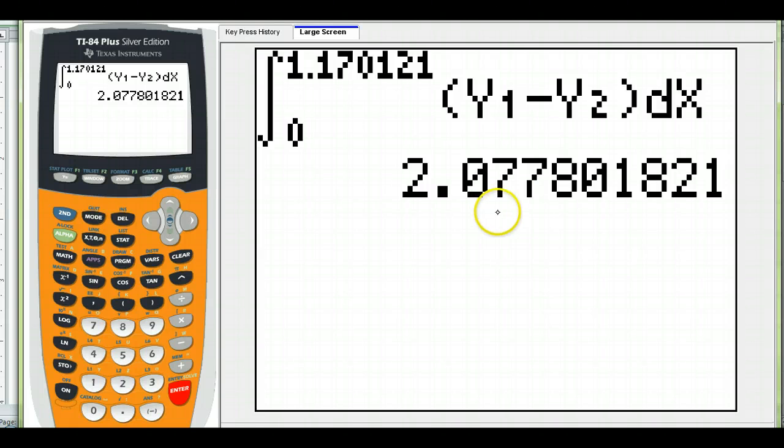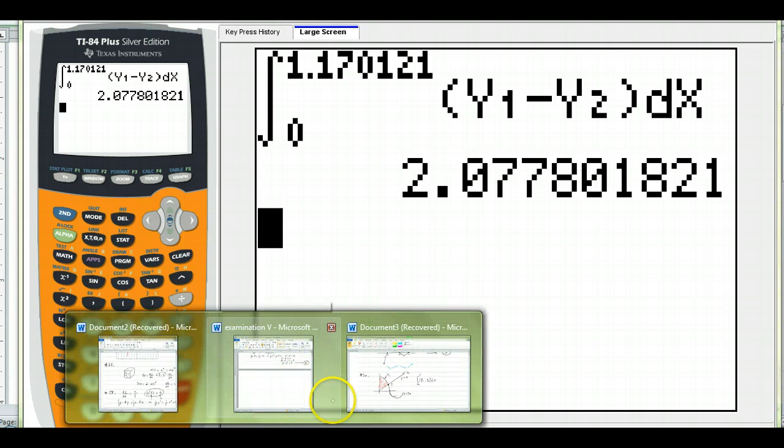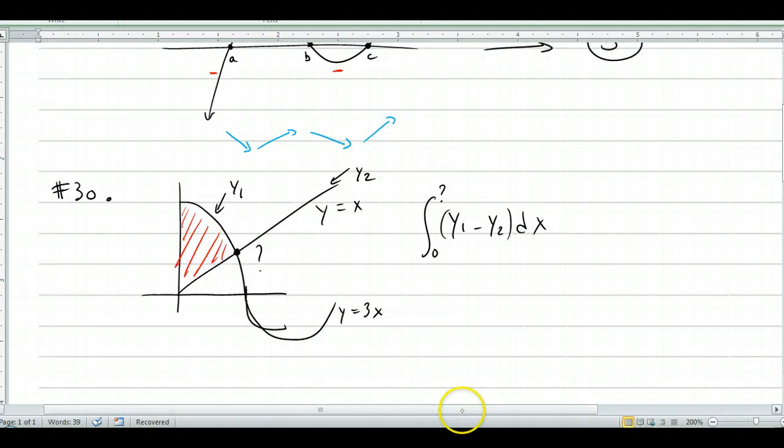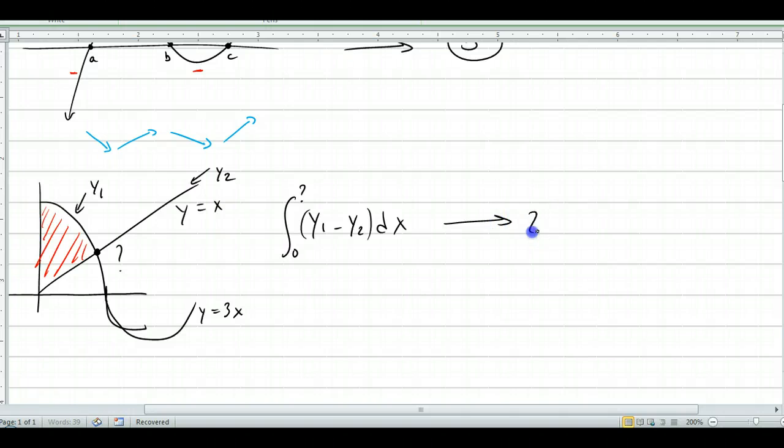2.077, and that's C. Okay, so this is only a calculator problem, and we found 2.077 something, so it is C.